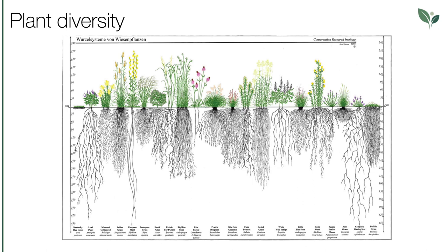Diversity is also the key to the healthy growth of meadows and pastures. While in the US, Kentucky bluegrass is sown, which only forms an extremely short root growth, the plants of a diverse meadow usually root several meters deep in various ways, offering completely different growing conditions. This is also associated with higher resilience and plant health.